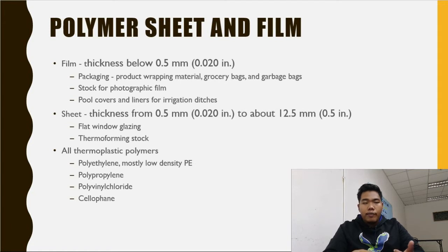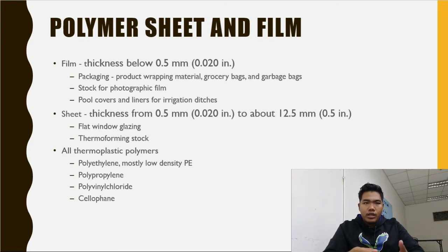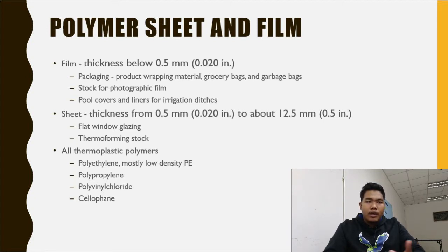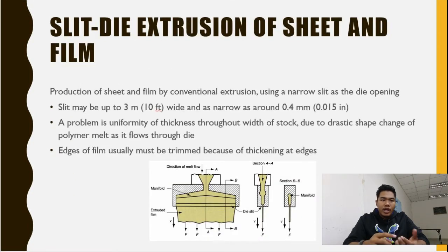Extrusion methods also apply to sheet and film. For film, the product thickness should be below 0.5 mm. For sheet, thickness ranges from 0.5 mm to 12.5 mm. An example of sheet product is window glazing, and common materials include polyethylene, polypropylene, and polyvinyl chloride. There are three different processes for this method: slit die extrusion, blown film, and calendaring.